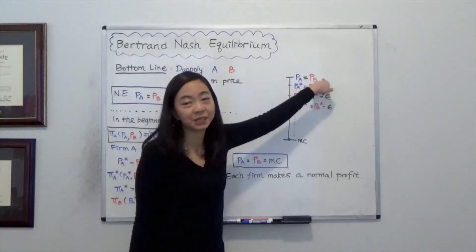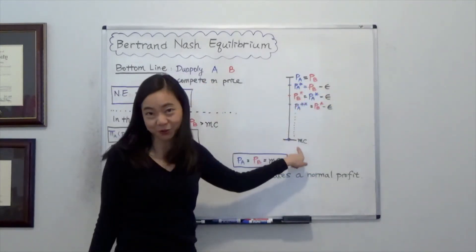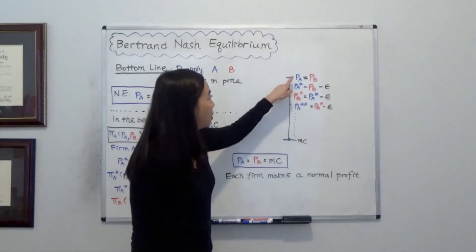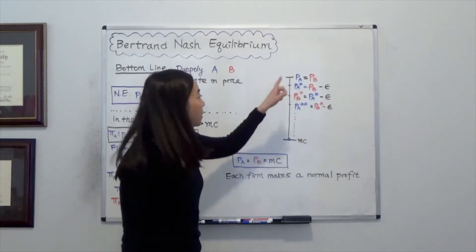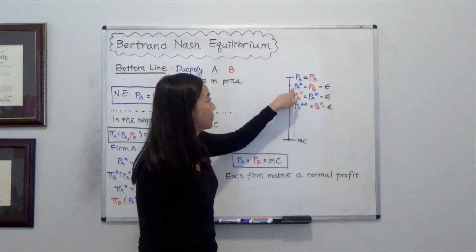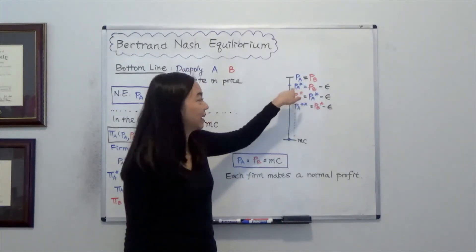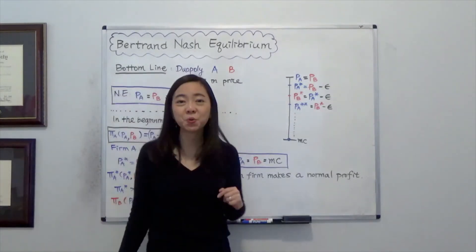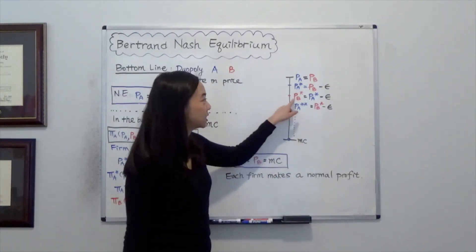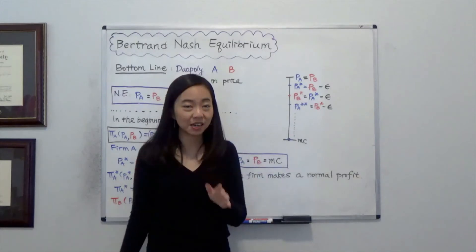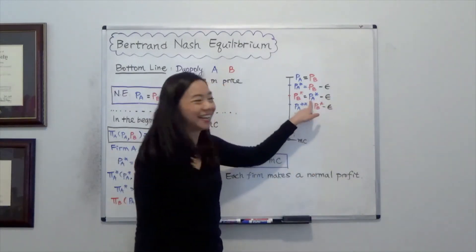So you see that's our beginning point where PA was equal to PB and that was greater than marginal cost. So firm A first said that I am going to lower my price so that my price is a little bit lower than firm B's price. Now firm B gets zero here, so firm B is going to say, you know what, I'm going to set a new price, PB star, which is a little bit lower than PA star.